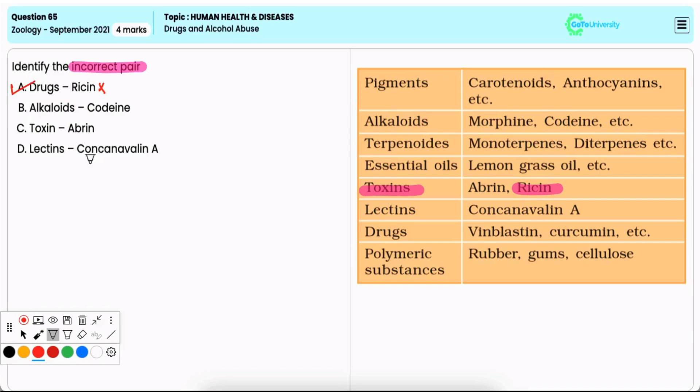Option B, alkaloids is to codeine. Now, it is a correct pair. Codeine is an alkaloid derived from the opium, that is the poppy plant, and it is used as a painkiller and cough suppressant, and it is an alkaloid. Hence, it is an incorrect option.